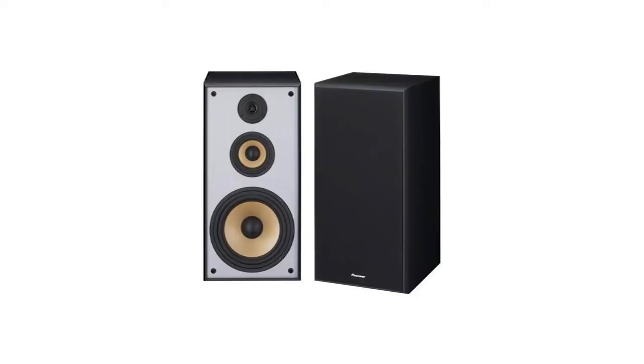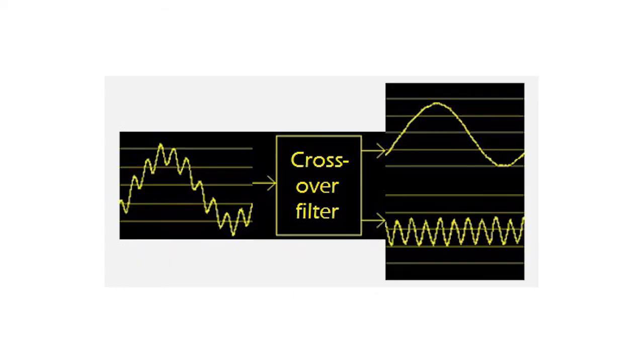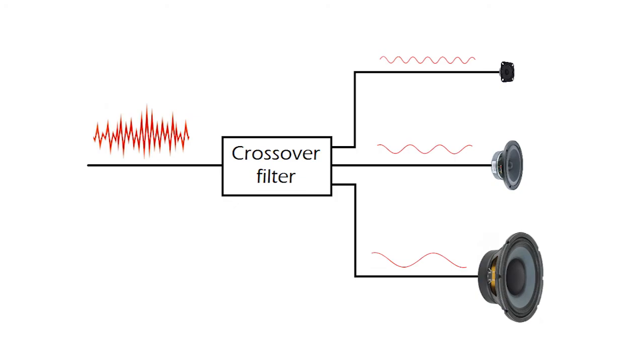There are also loudspeakers with more than a single driver in the same enclosure. This is for producing a larger range of frequencies using a single loudspeaker. In this case, the electric signal is separated in different frequency ranges using a crossover filter, to then send each portion to the corresponding driver.